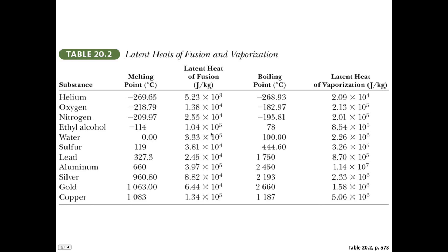So this table presents some values for the latent heats. Notice that there's a latent heat of fusion, which is when we're changing from a liquid to a solid, and also a latent heat of vaporization, which is when we're changing from a liquid to a gas. So for water, it's 3.33 times 10 to the 5 to melt the ice, and 2.26 times 10 to the 6 to cause steam to form.